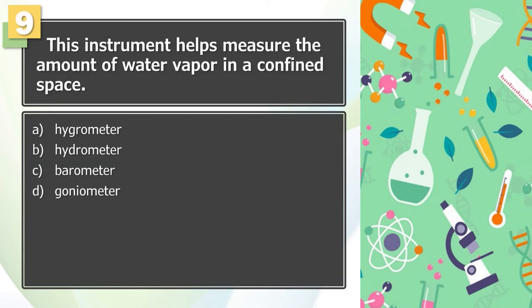Number 9: This instrument helps measure the amount of water vapor in a confined space. A. Hygrometer, B. Hydrometer, C. Barometer, D. Goniometer.